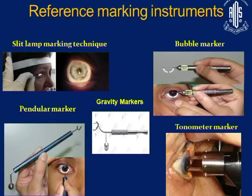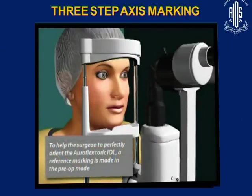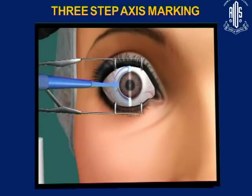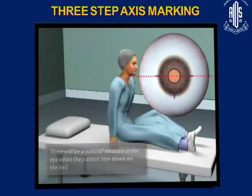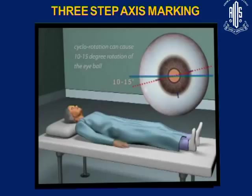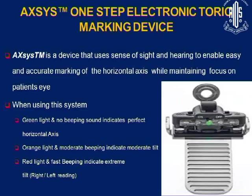The commonly used reference marking is slit-lamp marking with a bubble marker. The patient is seated at the slit lamp, and after topical anesthesia, the axis is marked at 90 degrees and 180 degrees. When the patient moves from sitting to supine position, there will be cyclotorsion of about 5 degrees, which may go up to 10 to 15 degrees. The electronic toric marker senses sight and hearing — green light with no beeping indicates a perfect horizontal axis; orange light or moderate beeping indicates moderate tilt; red light with fast beeping indicates gross tilt.